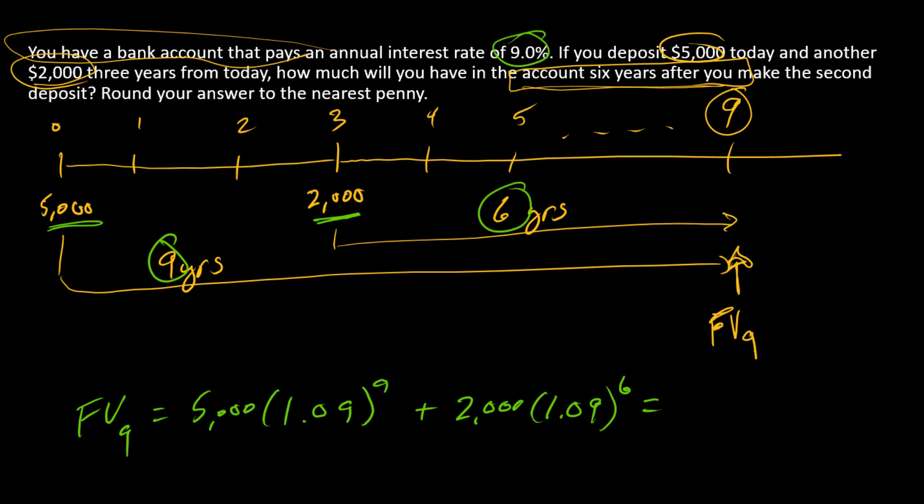The answer to this problem is fourteen thousand two hundred thirteen dollars and sixty seven cents. And so in this problem we're swapping this amount in year nine for these two cash flows that are deposited right now and in year three.